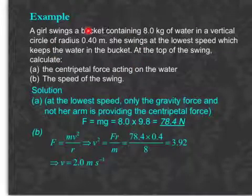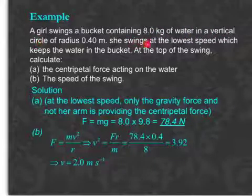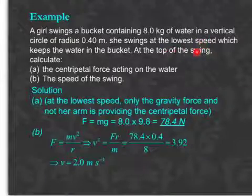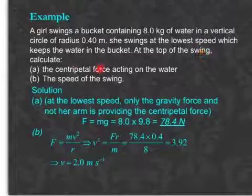In this example we have a girl swinging a bucket of water in a vertical circle. She swings it at the lowest speed possible. In that case, at the top of the circle, she is not pulling on the bucket. And so at the top of the swing, you have to work out the centripetal force and the speed.